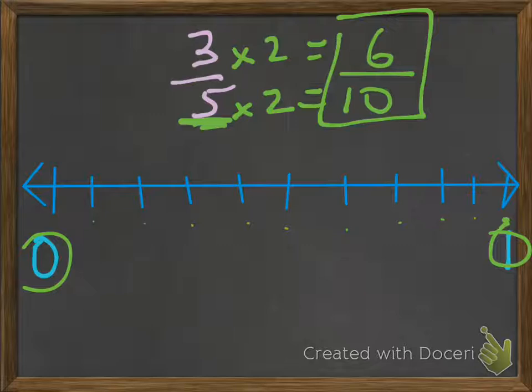If we know there's 6 out of 10, we start at 0 and count 1, 2, 3, 4, 5, 6. That's the same place as that. Since we know that, it can be made into a decimal. 6/10 is the same as 0.6.